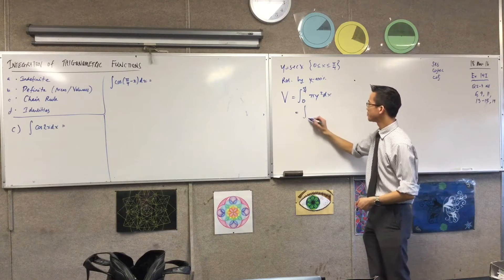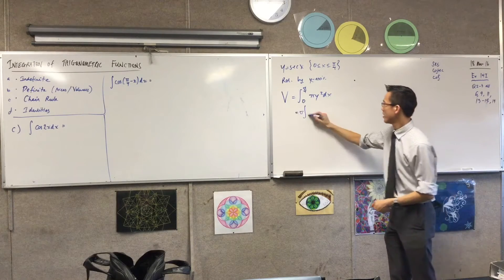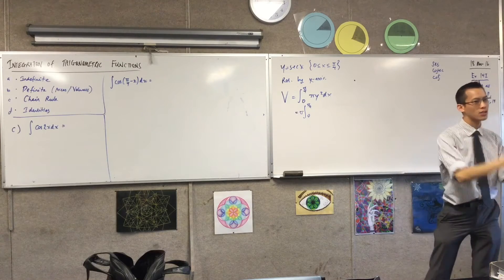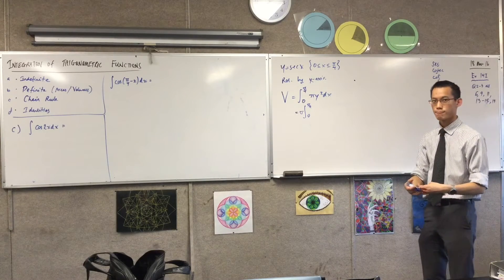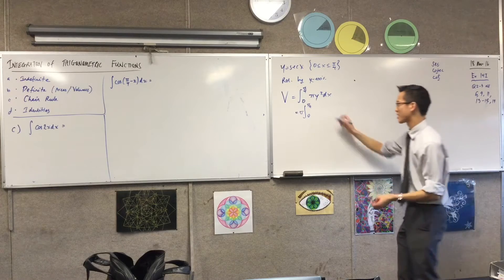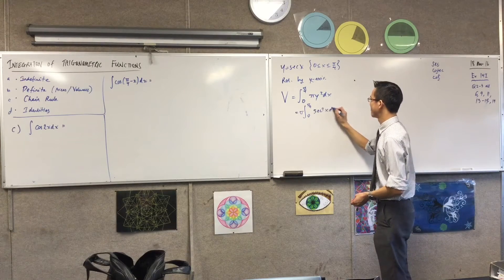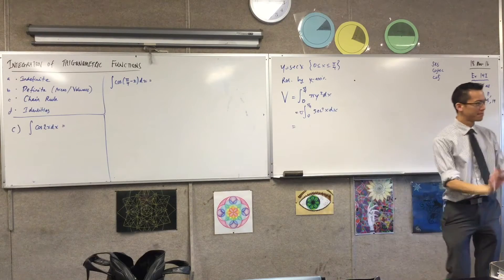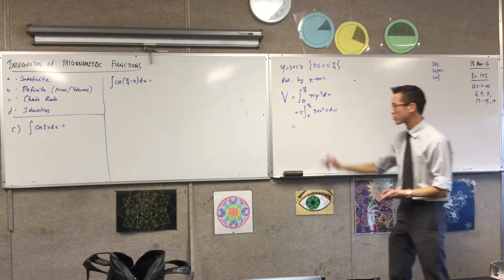It's still from 0 to pi on 4. And of course, y squared in this case is... Look, y squared is tan squared x. Okay, that's much happier looking, right? So now I can integrate.